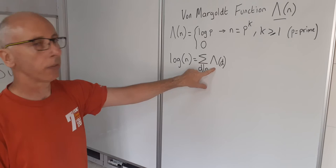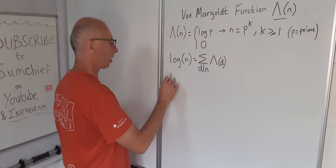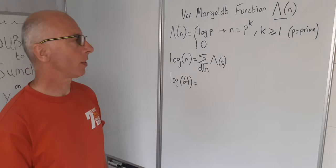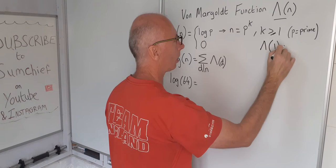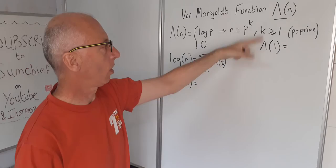So let's try log 64. So now we need the divisors of 64. The von Mangoldt function for 1. Well 1 is 1 to the power of 1. So 1 is not a prime number so it takes the value of 0.